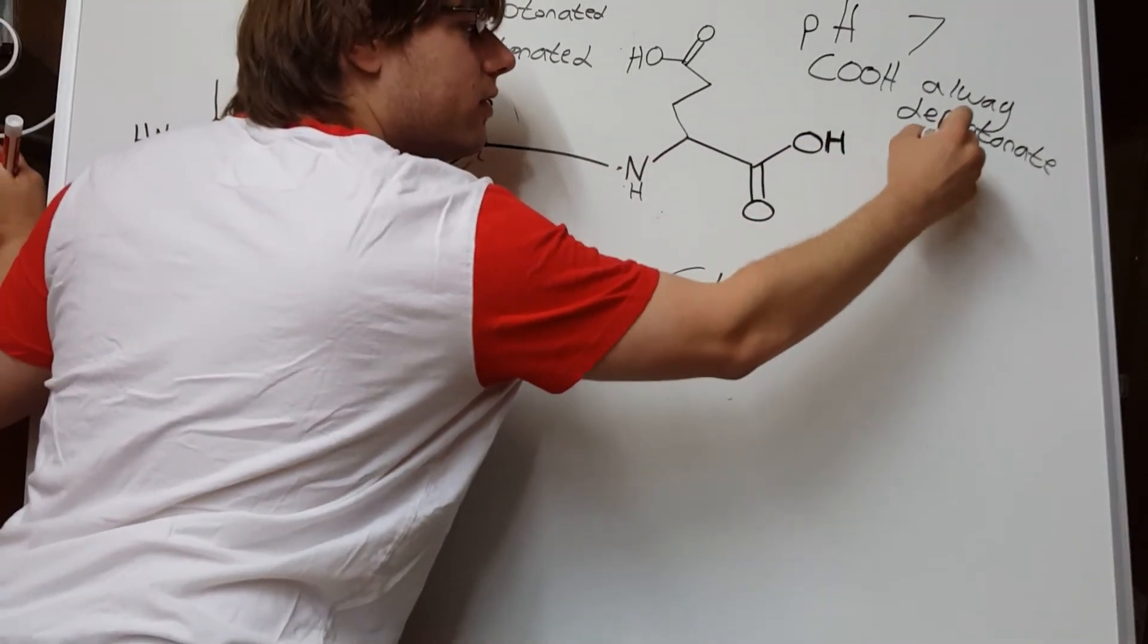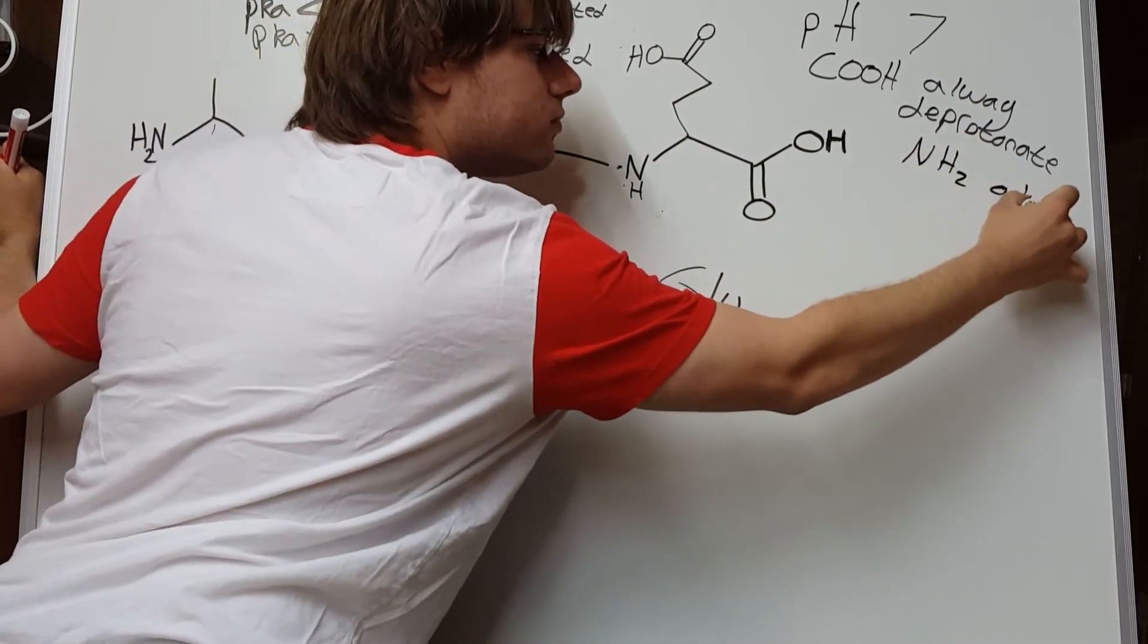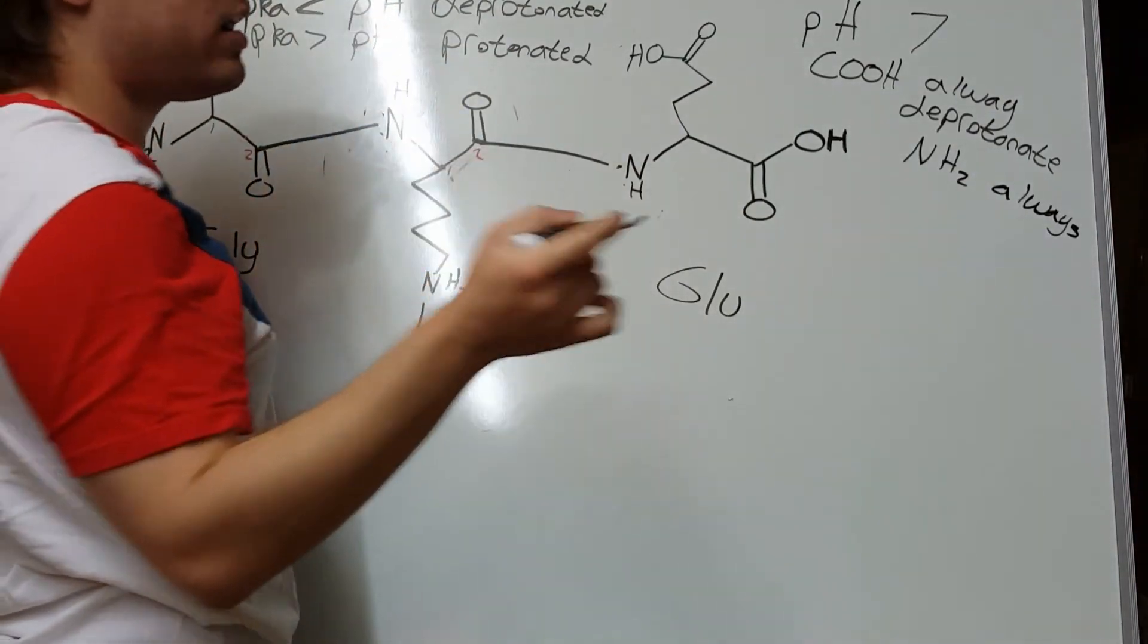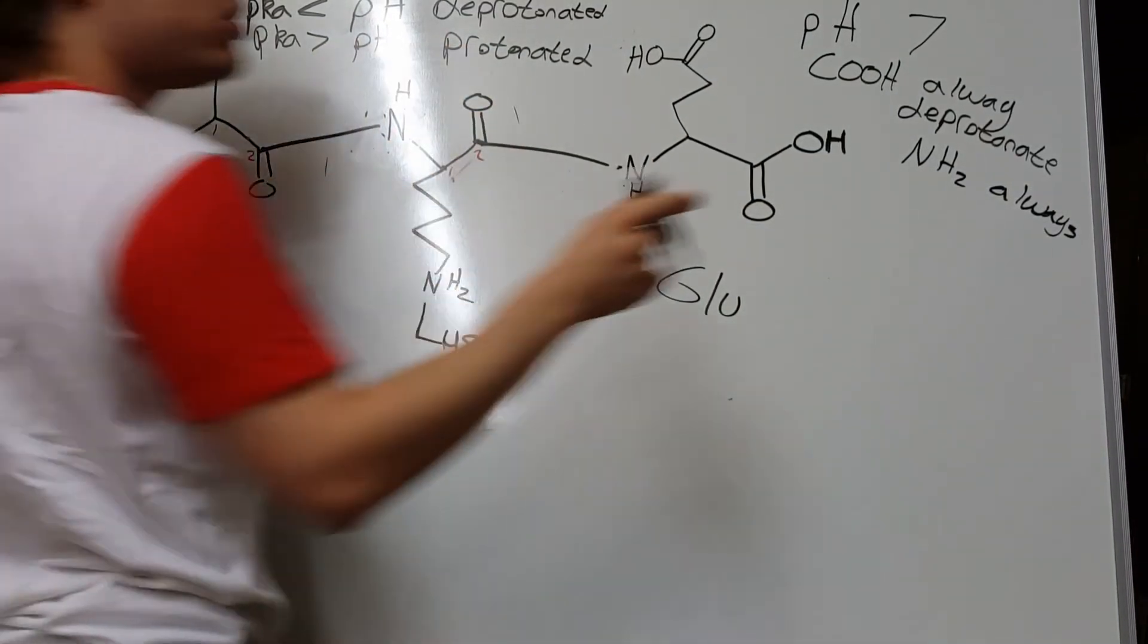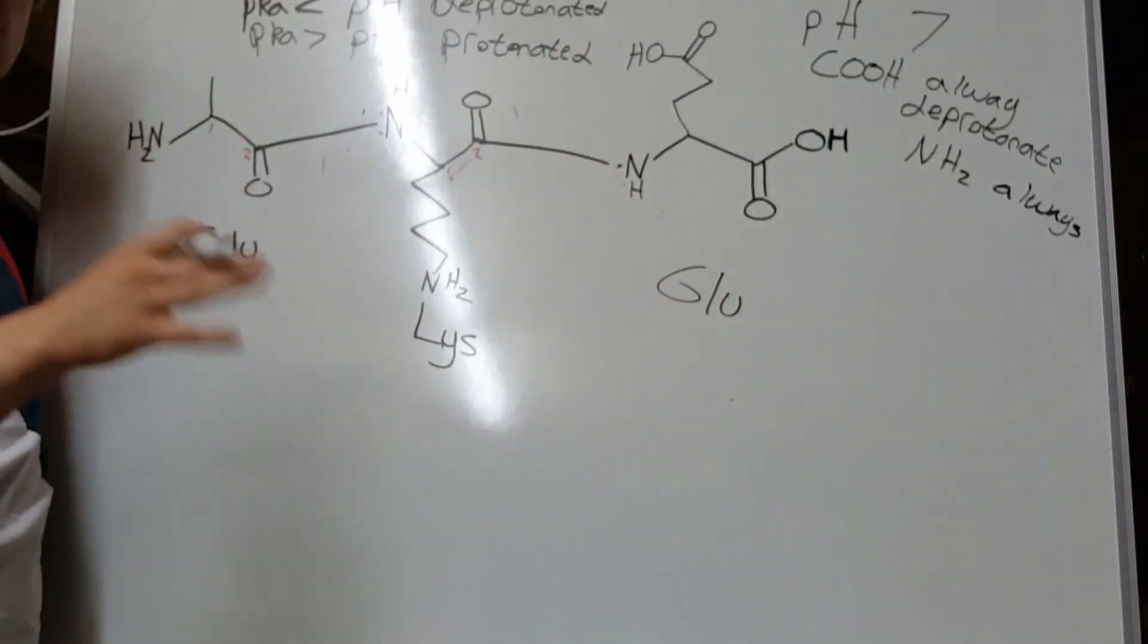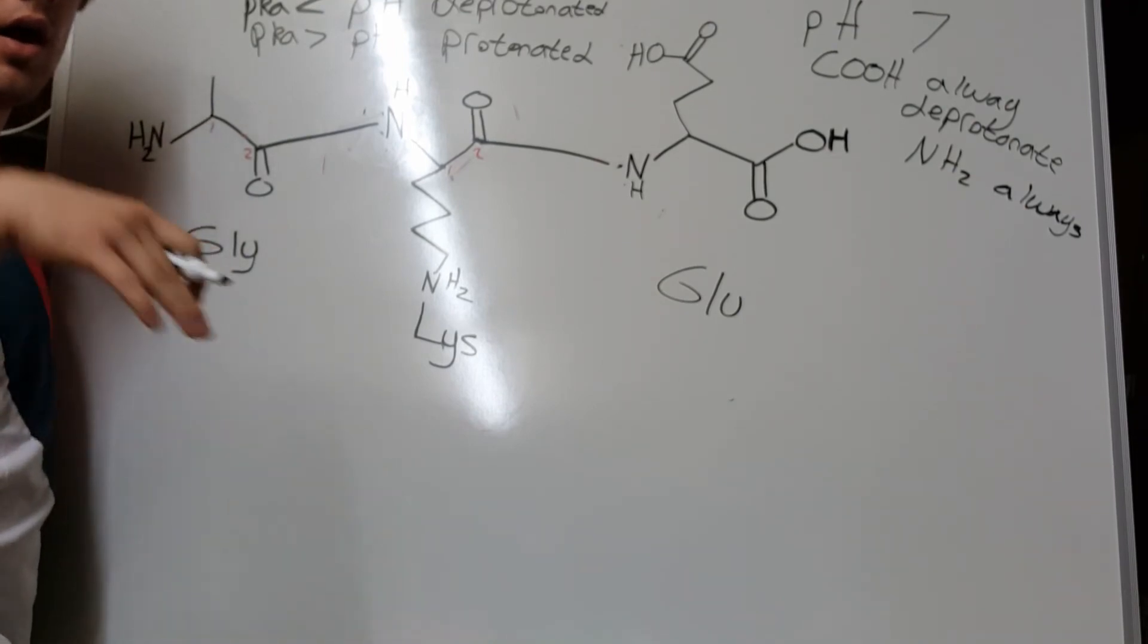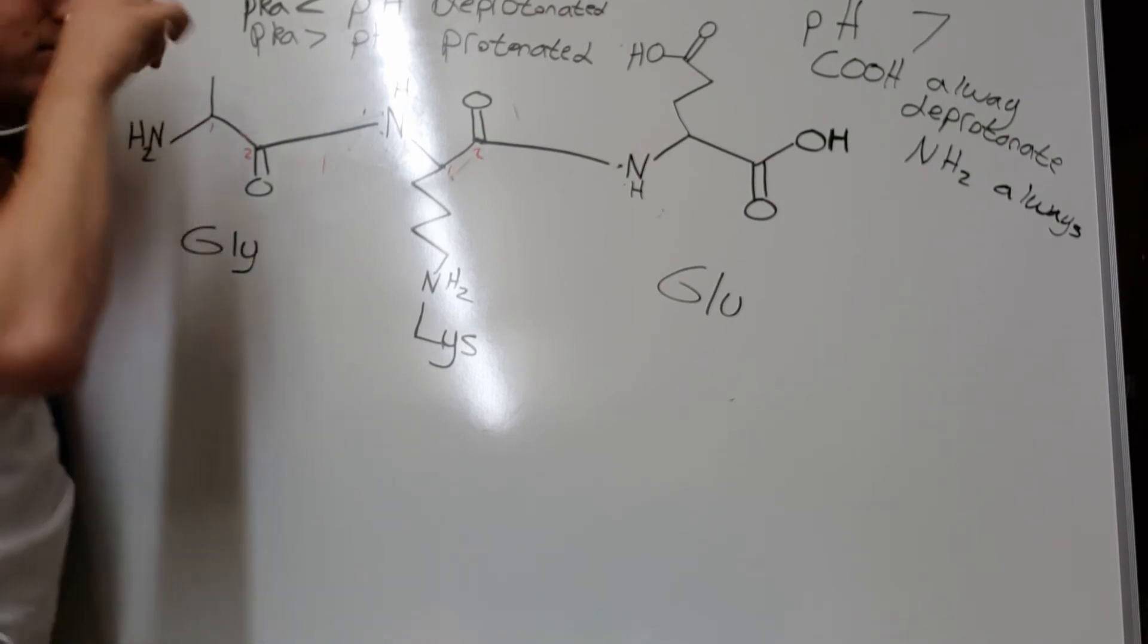And then the amino group will always be protonated. Because most amino groups have pKa's around 9 to 10. And then that makes sense again because if the pKa is greater than pH, it should be protonated. So, just know, you don't have to memorize any pKa's, but you should remember the rule that carboxylic acid will always be deprotonated and the amino group will always be protonated in a neutral pH when we're talking about amino acids.